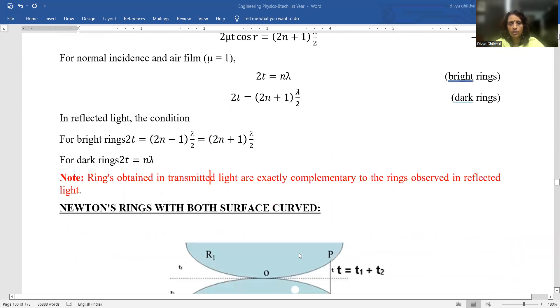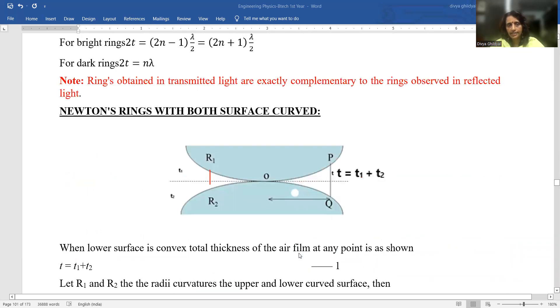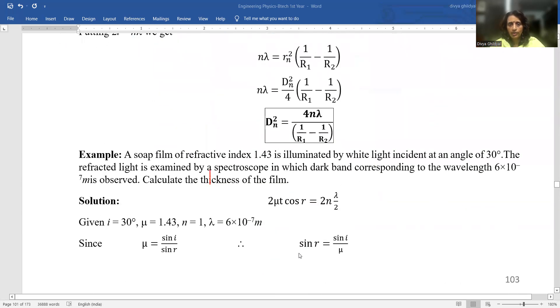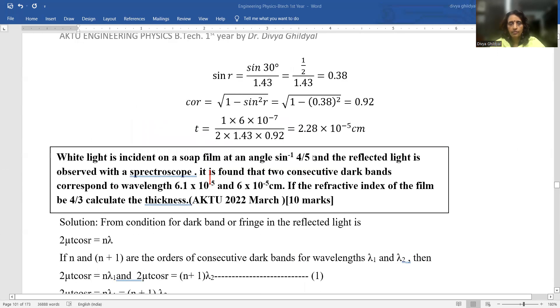Center of Newton ring is always dark unless and until there is a dust particle present. In interference pattern we only see those colors where the maxima condition has been satisfied and the extended source is a basic necessity to observe interference pattern properly. Thank you.